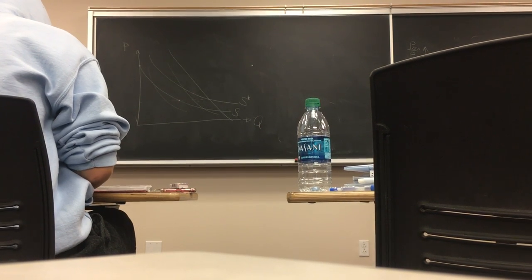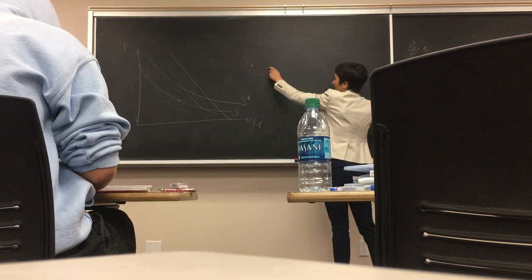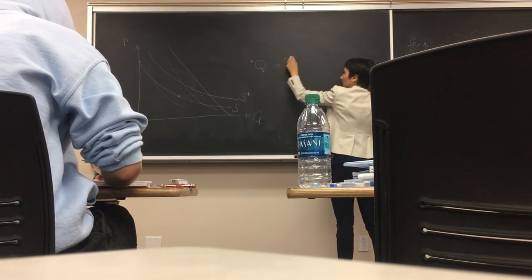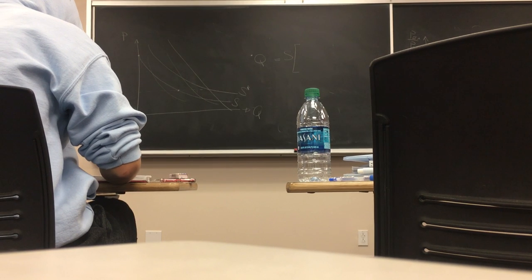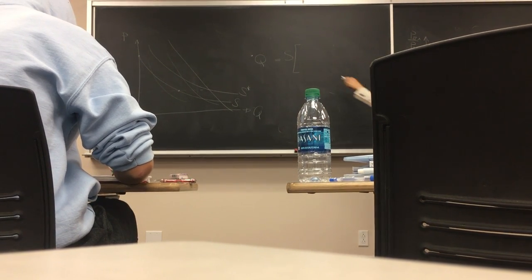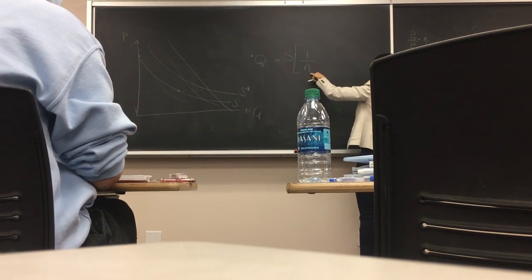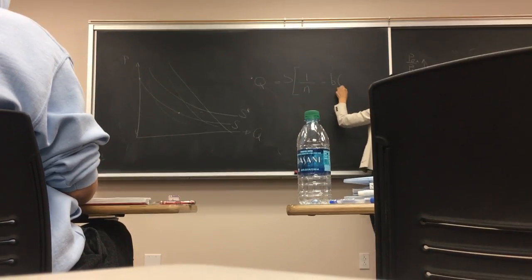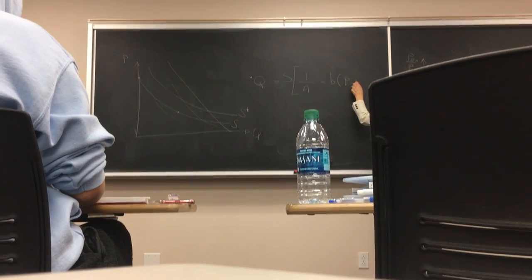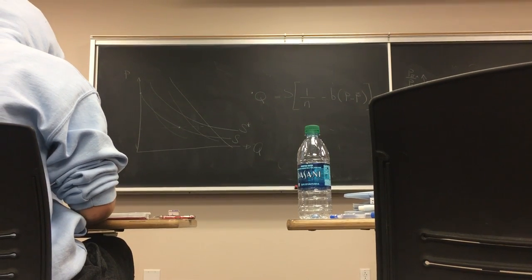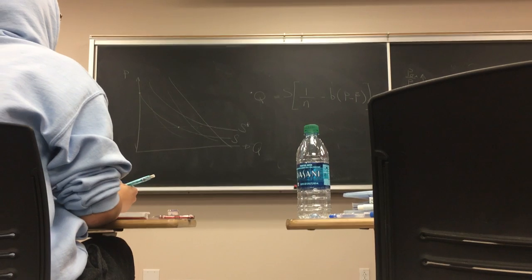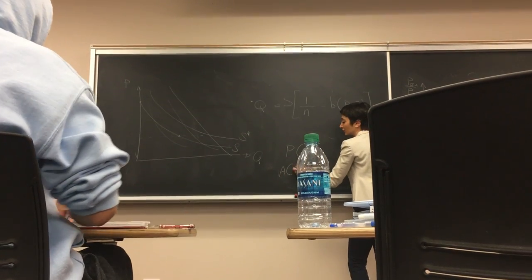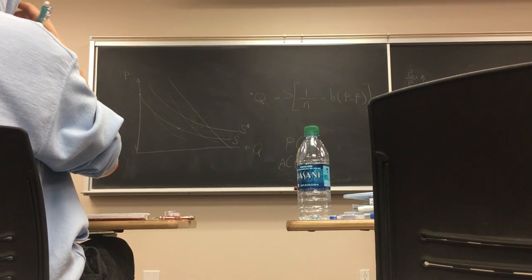We talked about internal economies of scale and monopolistic competition. With monopolistic competition, think about the demand curve for each firm. It has to do with the size of the market. The demand curve is: Q = S/N minus b times (P minus P-bar), where S is market size, N is number of firms. From this demand curve, I derived price as a function of N, and from the total cost function, average cost as a function of N.